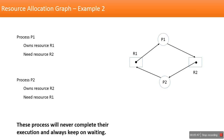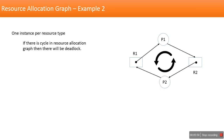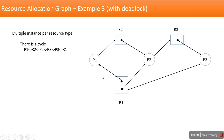This infinite waiting is the situation we call deadlock. In a resource allocation graph with one instance per resource type, if there is a cycle — P1 to R2 to P2 to R1 and back — it means there will be a deadlock.